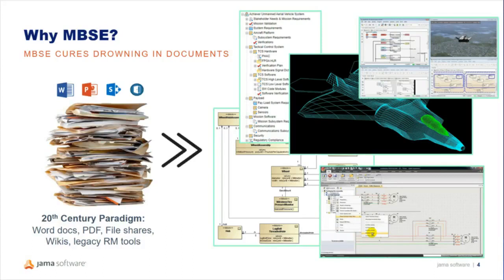Mechanical engineering, electrical engineering, and even software engineering — these disciplines have been using models for decades. Having the best information at the system level is critical. What we need is this paradigm shift away from documents and a shift in the way you think.